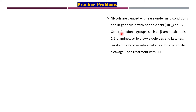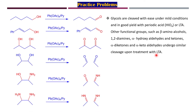Glycols are cleaved with ease under mild conditions in good yield using both periodic acid and lead tetraacetate. Other functional groups such as beta-amino alcohols, 1,2-diamines, 2-hydroxy aldehydes or ketones, alpha-diketones, and keto-aldehydes undergo similar cleavage upon treatment with lead tetraacetate.